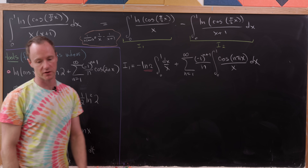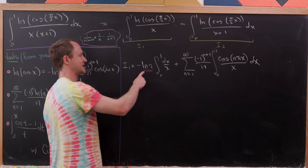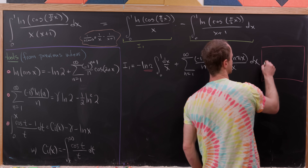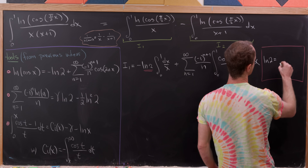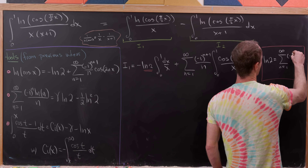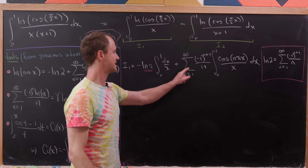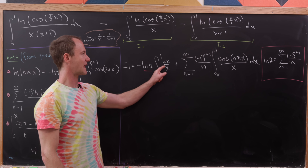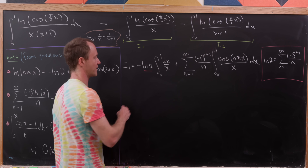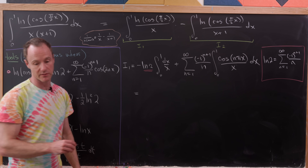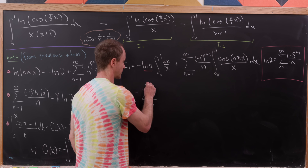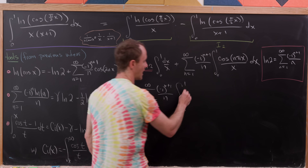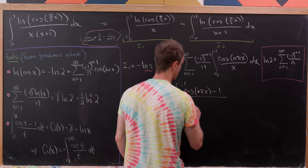We replace ln(2) with its well-known series expansion: ln(2) = sum from n=1 to infinity of (−1)^(n+1)/n. This lets us combine the −ln(2)/x integral with the cosine integrals inside the sum. After combining, we obtain the sum from n=1 to infinity of (−1)^(n+1)/n times the integral from 0 to 1 of (cos(nπx) − 1)/x dx.